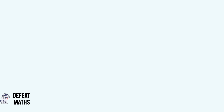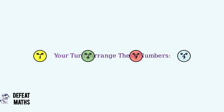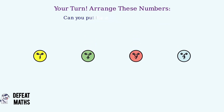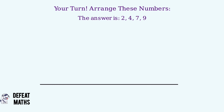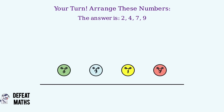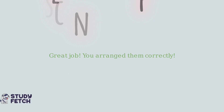One, three, four, five. Now it's your turn — can you arrange these numbers in ascending order? Let's see if you got it right. The numbers in ascending order are two, four, seven, nine. Great job! You've learned how to put numbers in ascending order.